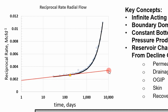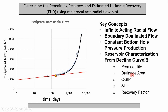This beginning region is the infinite acting region. After that, a triangle signifies the end of infinite acting flow, and you fit the data with a different equation — in this case, rate time equations from ARPS. The significance of this transition point is huge: once you determine the end of infinite acting flow, you can determine permeability, drainage area, original gas in place, skin, and recovery factor — everything we ever want as a reservoir engineer.